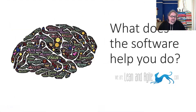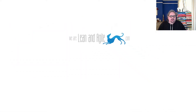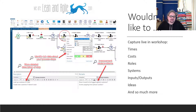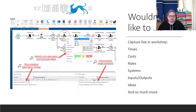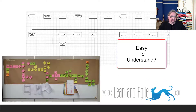So what does it do? What does it help you do? Well, instead of plastering the wall with post-its, we're going to capture live in the workshop. And instead of just getting a picture of processes, we're going to capture lots of rich information — times, costs, roles, locations, systems, inputs, outputs, ideas, value, and so much more — all captured within the tool in a single place, rather than the traditional approach of post-its then transferring to Visio.